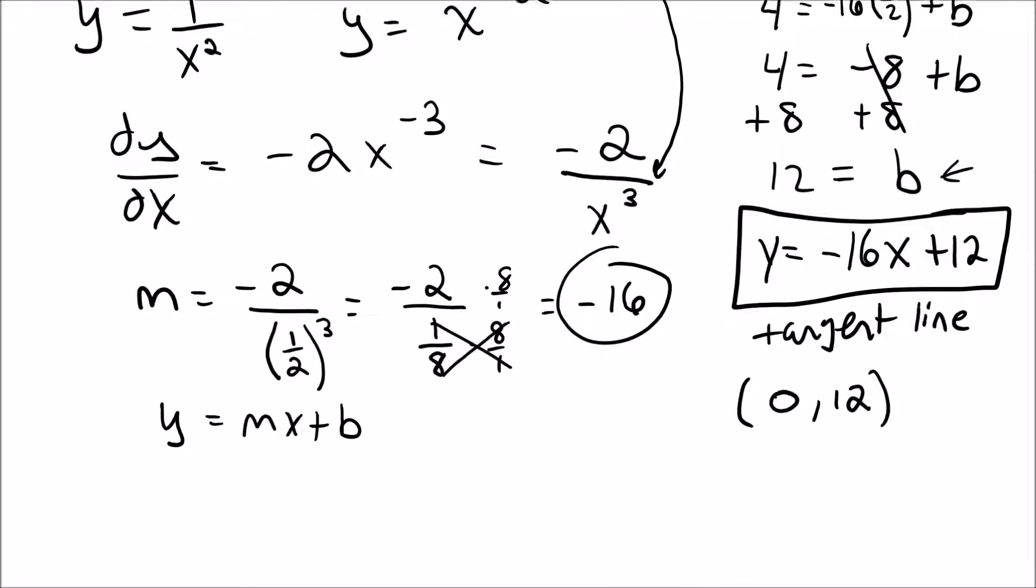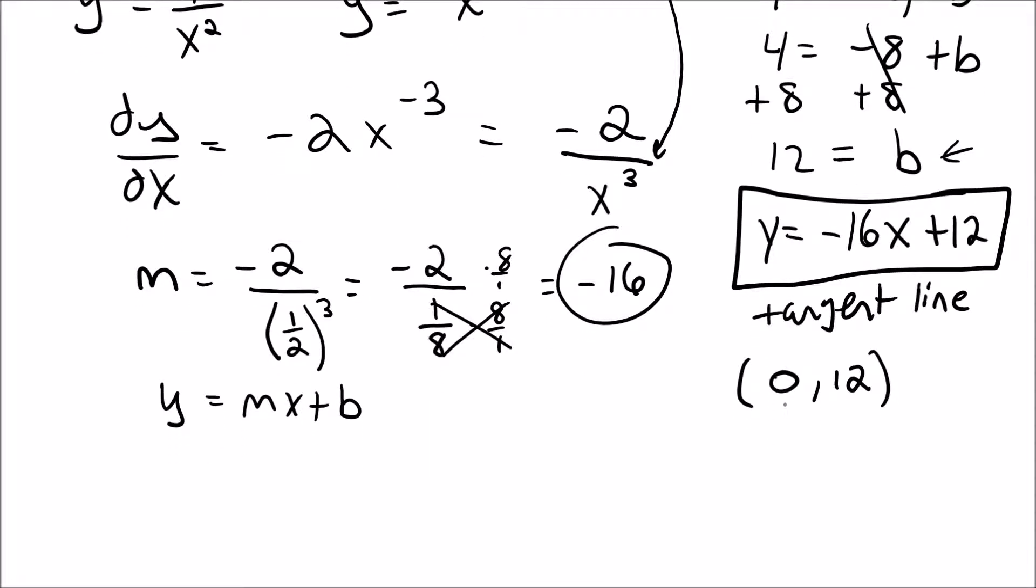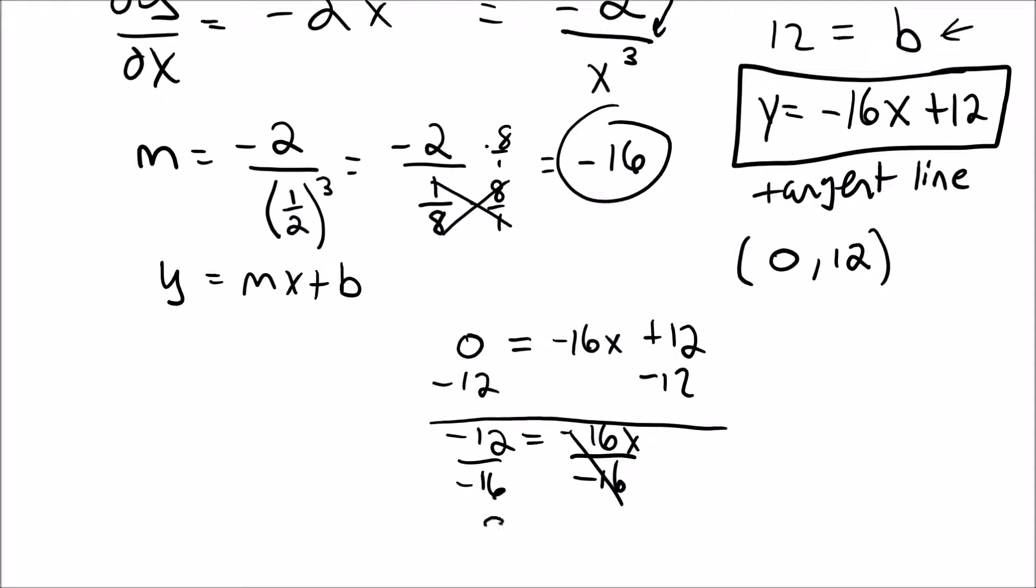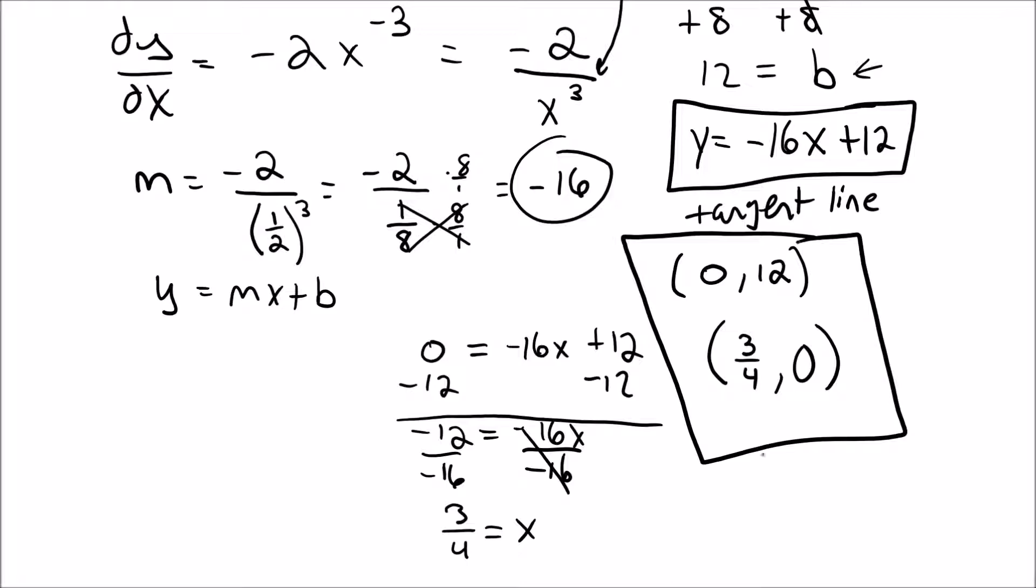Now we need to get the other point, the x-intercept. To get the x-intercept, we let the y value equal 0. So 0 equals negative 16x plus 12. To find the x-intercept, I subtract 12 to get negative 12 equals negative 16x, and divide by negative 16 to get negative 12 over 16, which reduces to 3/4. So we also get the point 3/4, 0. There are our two points P and Q.